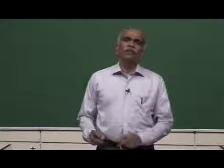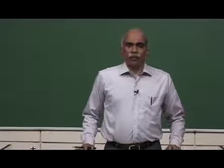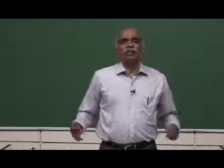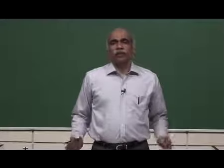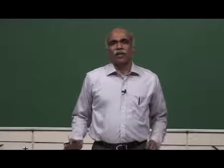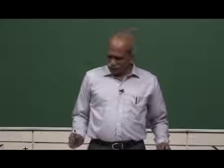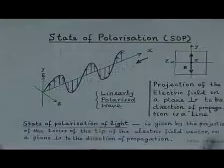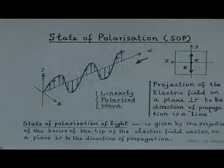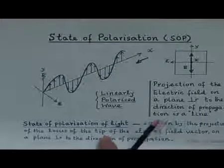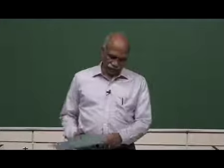In this course, we will see primarily linearly polarized light, but there are different states of polarization, namely circularly polarized light, elliptically polarized light, and so on. This definition will help in identifying the state of polarization of light.